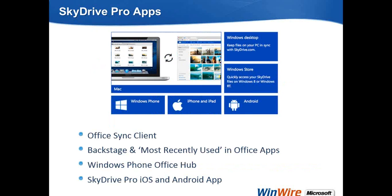Let's talk about SkyDrive Pro apps. Basically, what apps work with SkyDrive Pro? One is the Office sync client, which handles synchronization. Then you have the Backstage View and the most recently used files in Office apps — how Backstage View works and how recently used files work. The third is the Windows Phone Office Hub. Multiple mobile applications are available for SkyDrive Pro: Windows, iOS, and Android. Using them, you can access content on your SkyDrive Pro using your mobile devices.